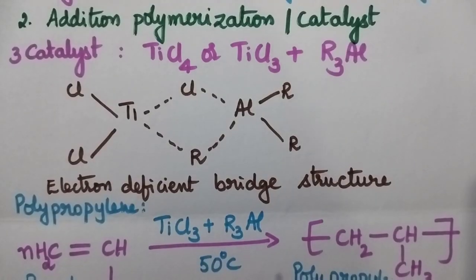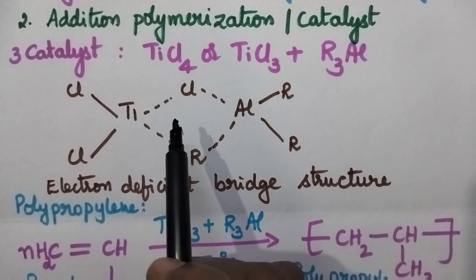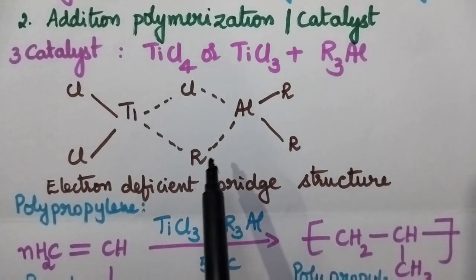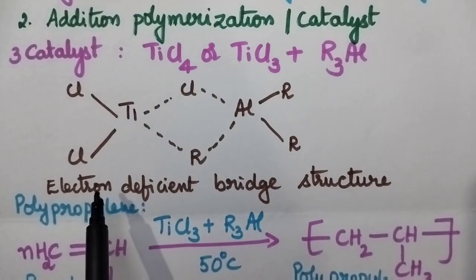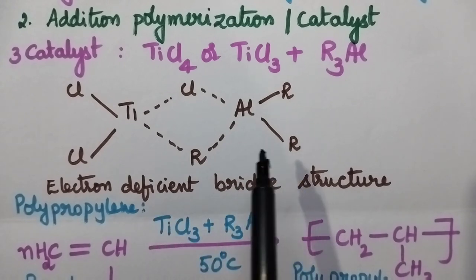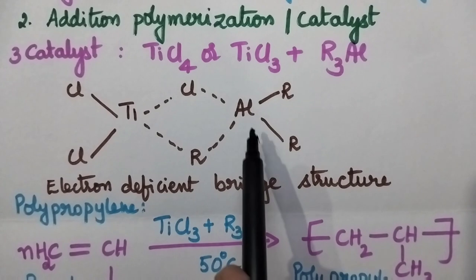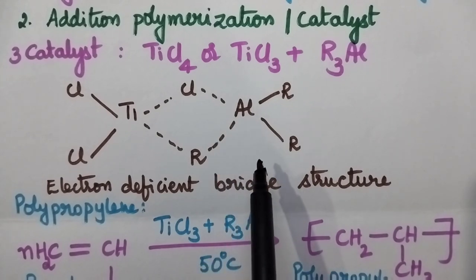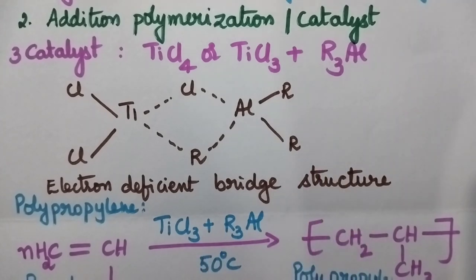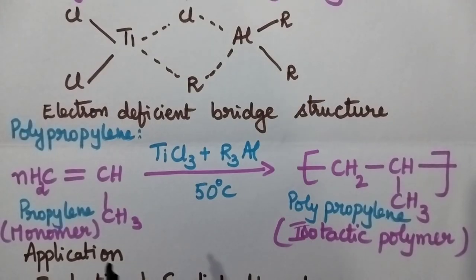During the polymerization process, initially the catalyst rearranges itself which results in the formation of an electron deficient bridge-like structure, and here the monomers will attack and results in the formation of isotactic or syndiotactic polymers. So, always coordination polymerization takes place in the presence of a catalyst.